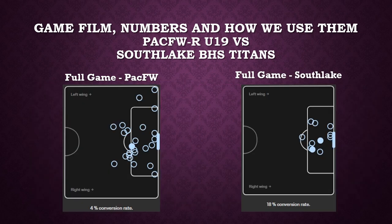Here's a chart of where the shots came from on goal. We're on the left, they're on the right — this is for the whole game. You can tell we obviously had more shots. But the quality of shots they were taking is higher quality — they're in the box, in the center, and they're converting at an 18% rate. Whereas we're converting at a lower rate, really driving at them and taking lower quality chances.